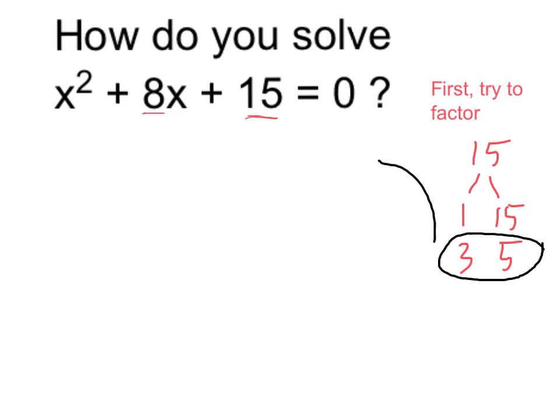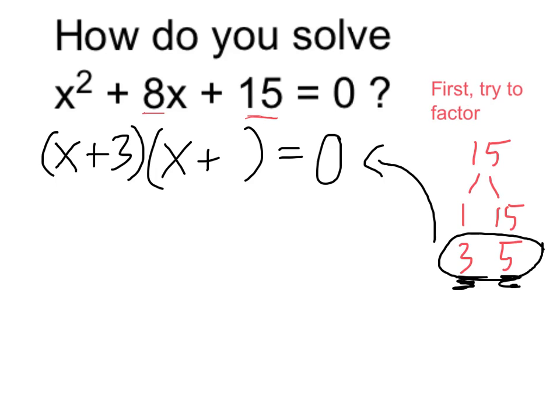So I can use these to factor as a product of two binomials, and I'm going to write it in parentheses like this, still equal to 0, but now I have x plus my first factor, which is 3, times x plus my second factor over here, which is 5, and all of that is equal to 0.